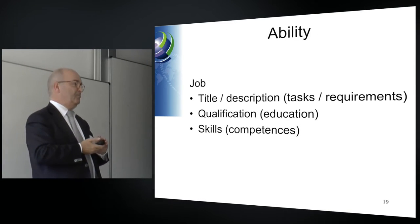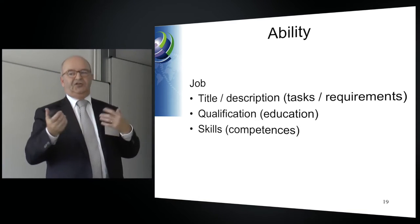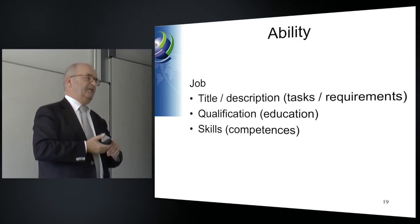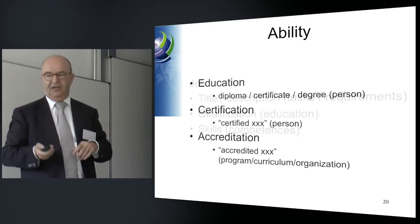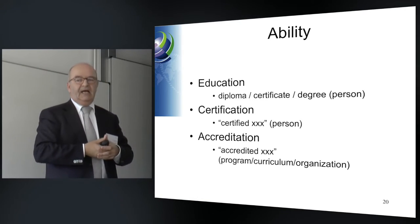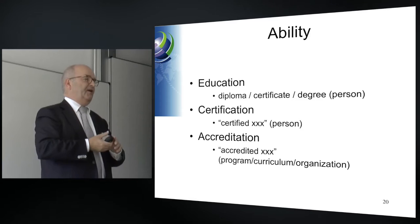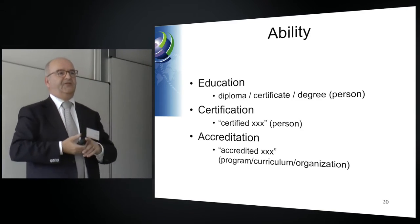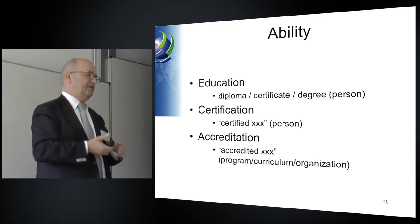So what are we talking about? Ability. A job is a job description and requirements. You need education and qualifications to get the job, and you need skills and competencies to do the job right. Education is probably more your field than mine — I'm not from academia. This covers all the subsequent programs you have to follow to be trained, to get your diplomas, certificates, and degrees.